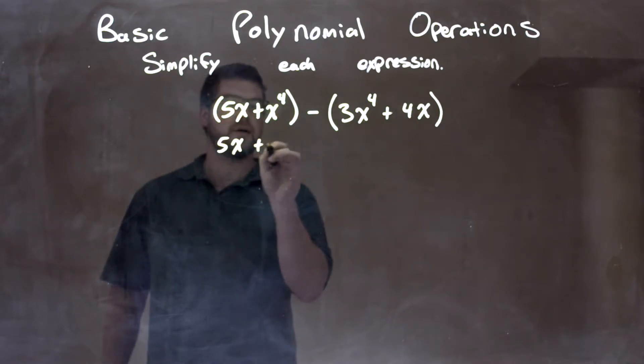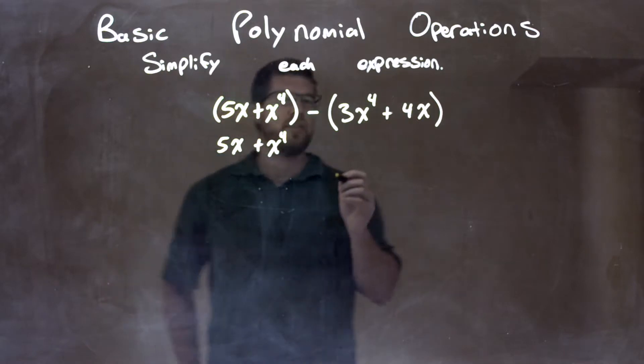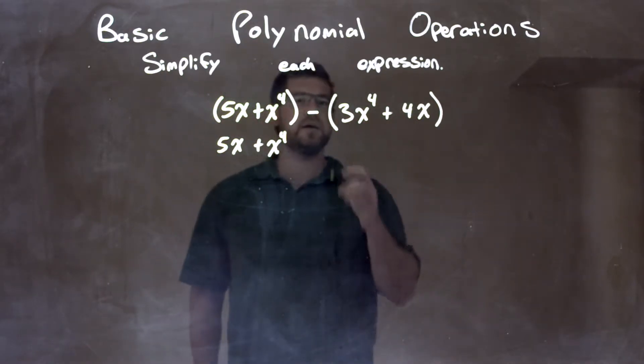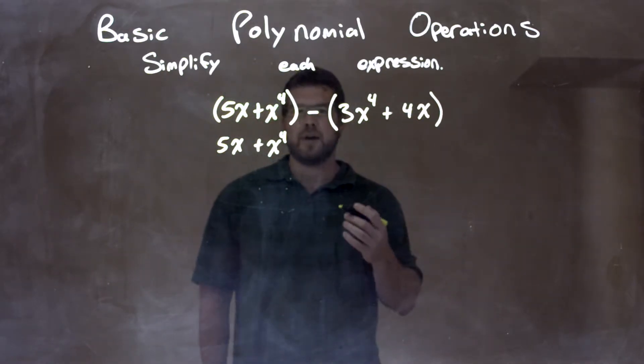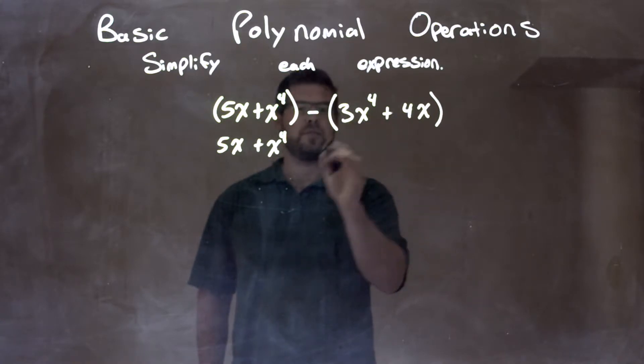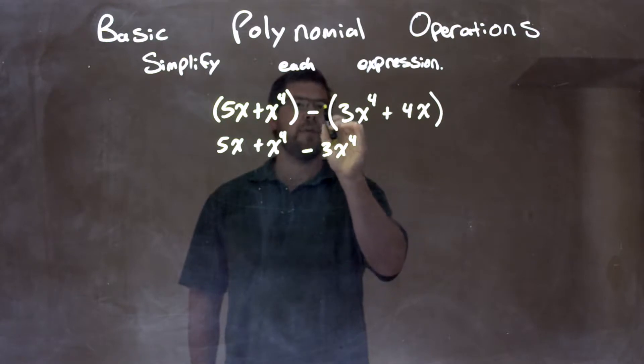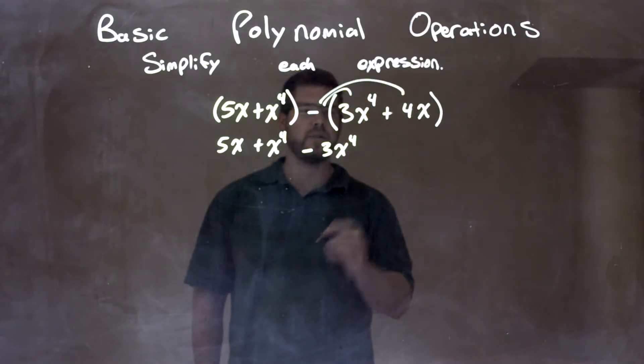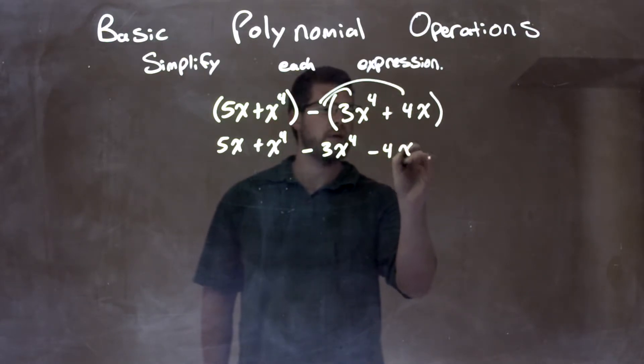So I have 5x plus x to the fourth here. Then, from there, I can distribute this minus sign around. We have minus 3x to the fourth, so we have minus 3x to the fourth here, and make sure we distribute that minus sign to both parts. We have minus 4x.